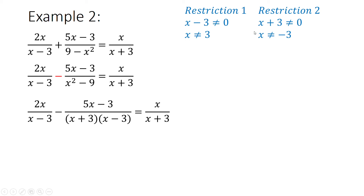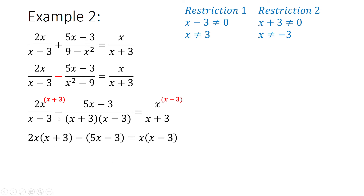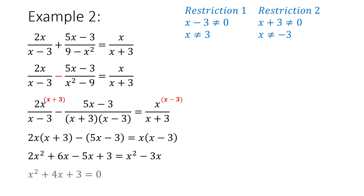Now we've dealt with our restrictions, so we would need to actually find an LCD properly. This first fraction is missing the x plus 3, so I'm going to multiply that numerator by x plus 3. This denominator is missing the x minus 3, so I'm going to multiply that one by x minus 3. Then I drop my LCD. I'm going to distribute the 2x into the x and the 3, distribute that negative into the bracket, and distribute that x into the bracket. Then I get my like terms together.